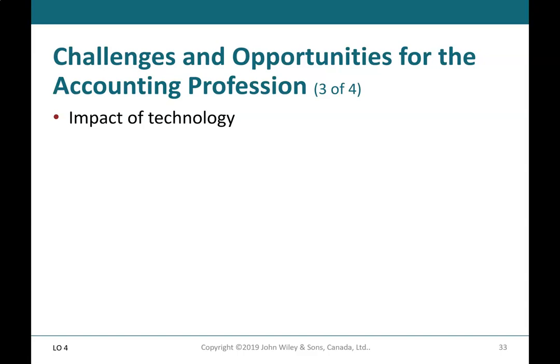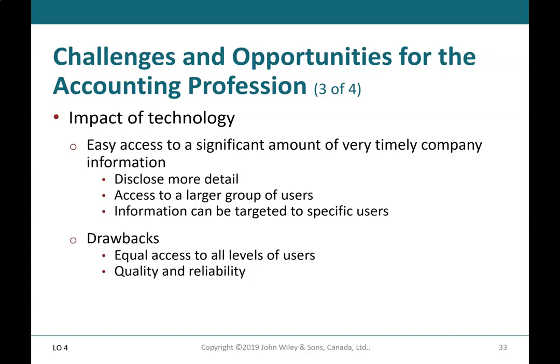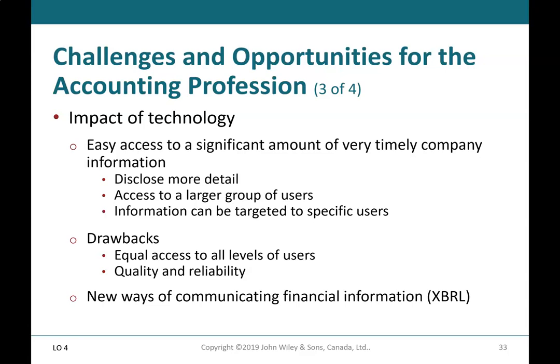Challenges and opportunities for the accounting profession (3 of 4) — Impact of technology: Easy access to a significant amount of very timely company information allows companies to disclose more detail and access a larger group of users, and information can be targeted to specific users. Drawbacks include equal access to all levels of users and questions of quality and reliability. New ways of communicating financial information include XBRL.